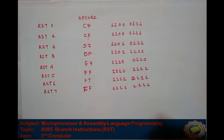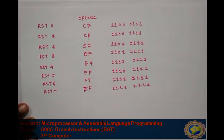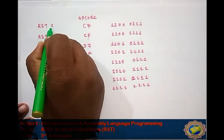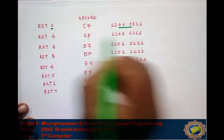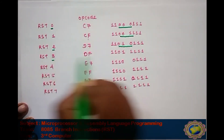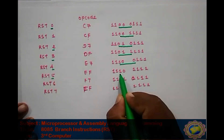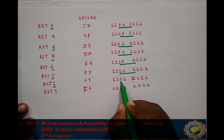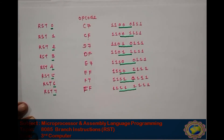In this table, the middle 3 bits of the binary opcode represent the RST number n. For RST 0 it is 000, RST 1 is 001, RST 2 is 010, RST 3 is 011, RST 4 is 100, RST 5 is 101, RST 6 is 110, and RST 7 is 111. These middle 3 bits represent the operand in the opcode.